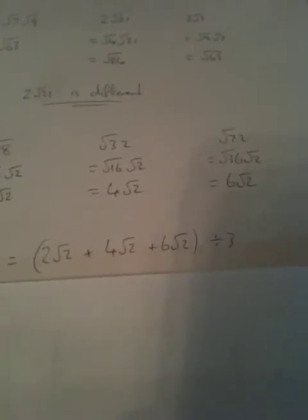Now finding the mean: you add the numbers together and divide by how many numbers you have. So we add 2√2, 4√2, and 6√2 together and divide by 3. We basically have 12√2s — 12 somethings divided by 3 is 4 somethings. The mean is 4√2.